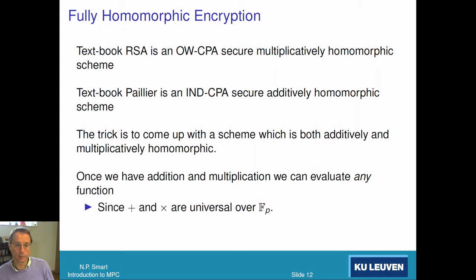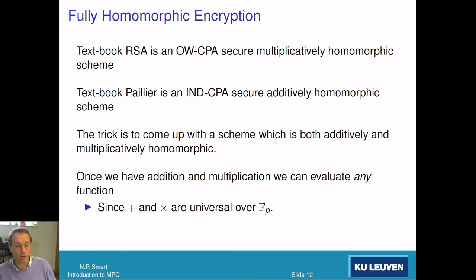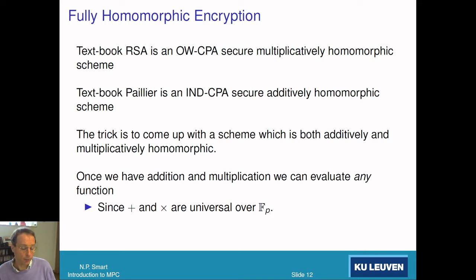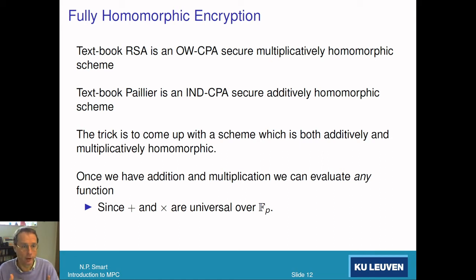Paillier, as done in textbooks, is another encryption scheme based on factoring. It is additively homomorphic: there's an operation which allows you to add two ciphertexts together and the result encrypts the addition of the underlying plaintexts. The difficulty is coming up with a scheme which is both additively and multiplicatively homomorphic. This was seen to be impossible for many years. The interest is that addition and multiplication are universal over a finite field or ring, so if you have both, you can compute any function homomorphically.